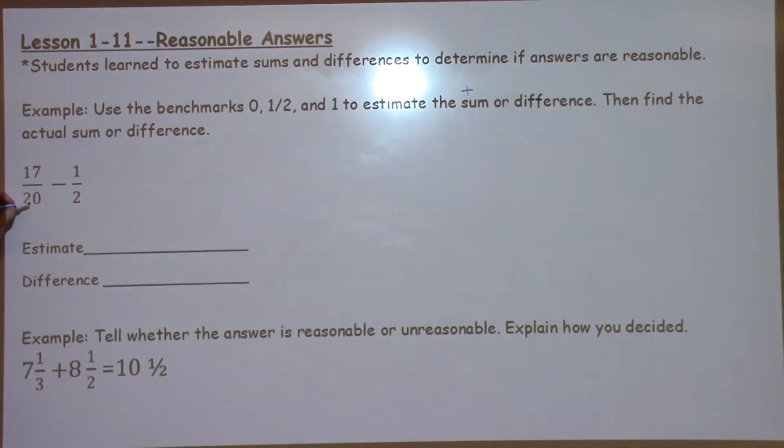17 20ths is not close to 0. Is it close to 1 half? Well, I know 1 half of 20 is about 10, and that's 7 away. And I can think if it goes to 1 whole. Well, 17 20ths, that's only 3 away to make it a whole. So 17 20ths would actually round up to being 1 whole.